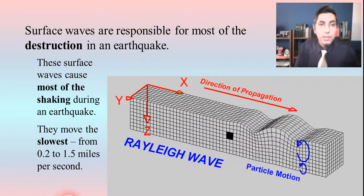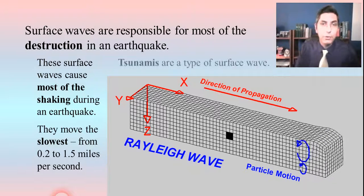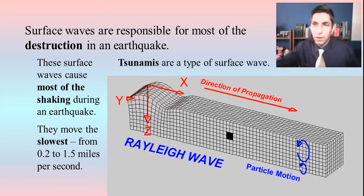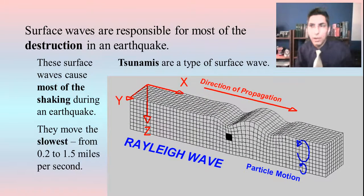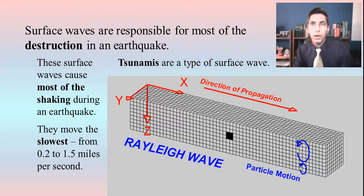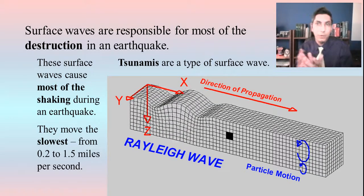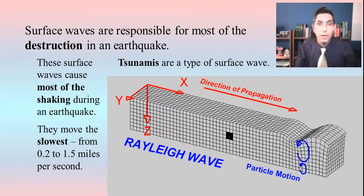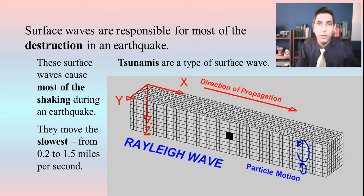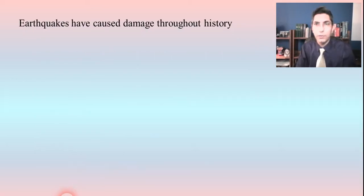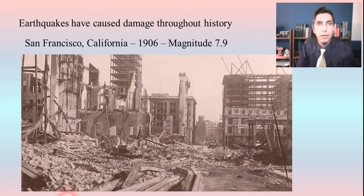Tsunamis are a type of surface wave as well. When there's an earthquake — especially if the epicenter is in the ocean — the energy goes right up to the surface and that tsunami can propagate from there and cause quite a bit of damage as it hits the shore.